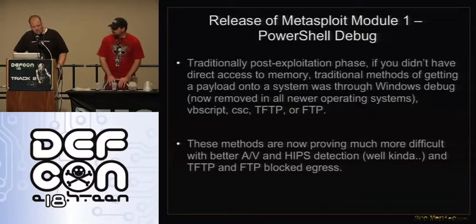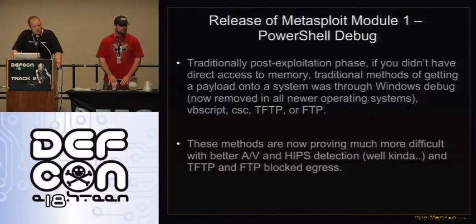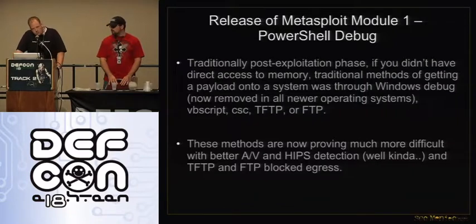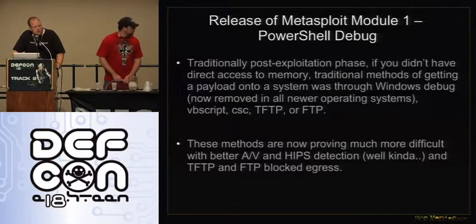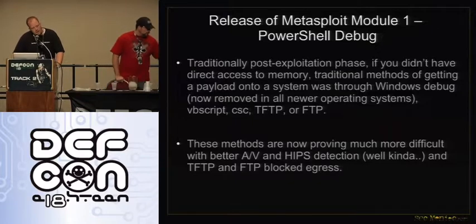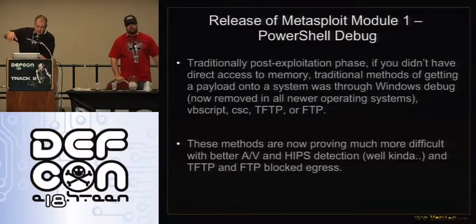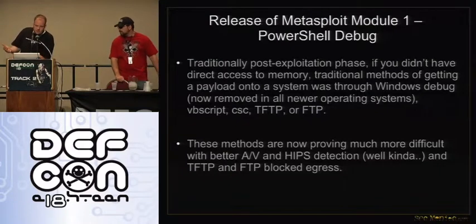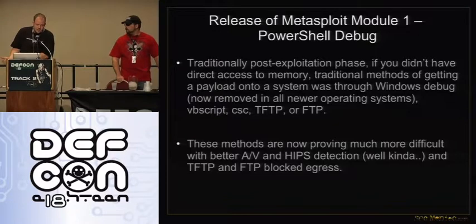Release of Metasploit module one. In Fast Track, when you're doing SQL injection through MS SQL or you find a weak SA account, what we do is take a binary, convert it to hexadecimal, and use the XP command shell stored procedure to write that hex representation of the binary to the underlying operating system. Try saying that three times fast.